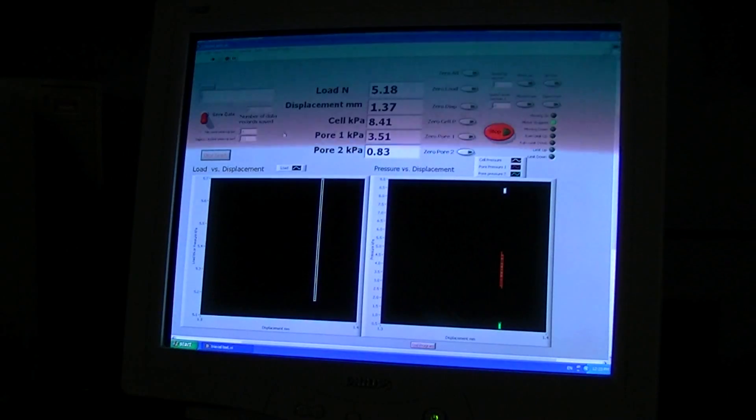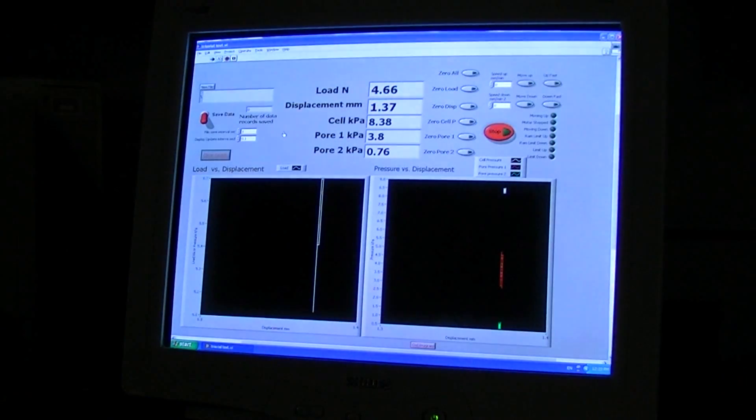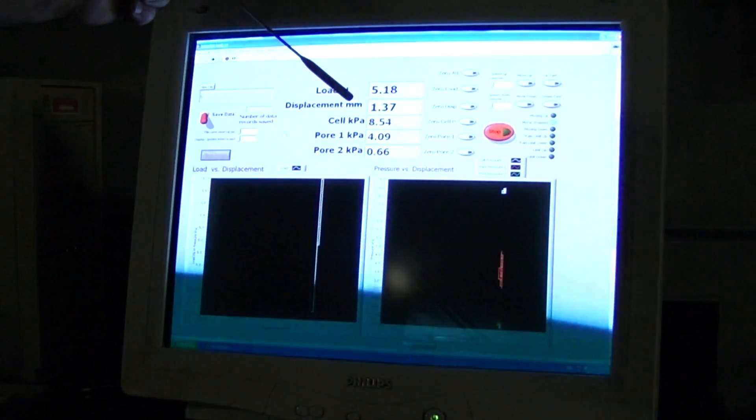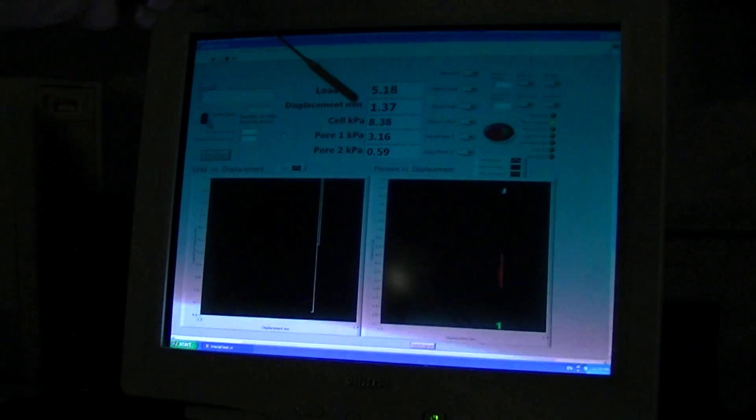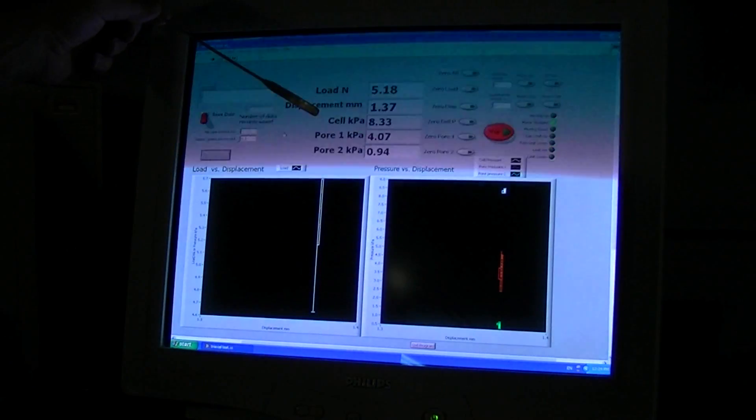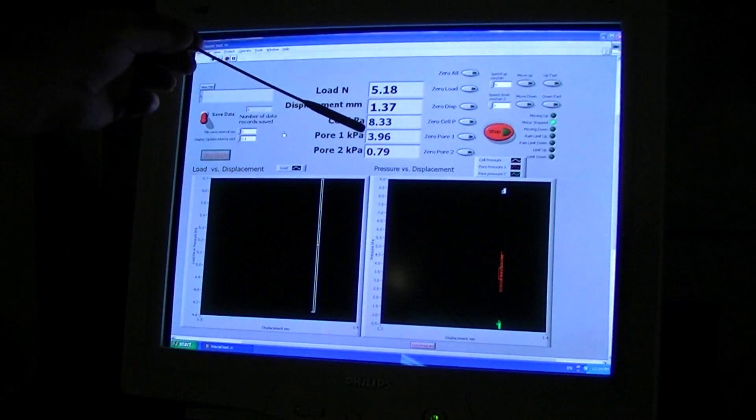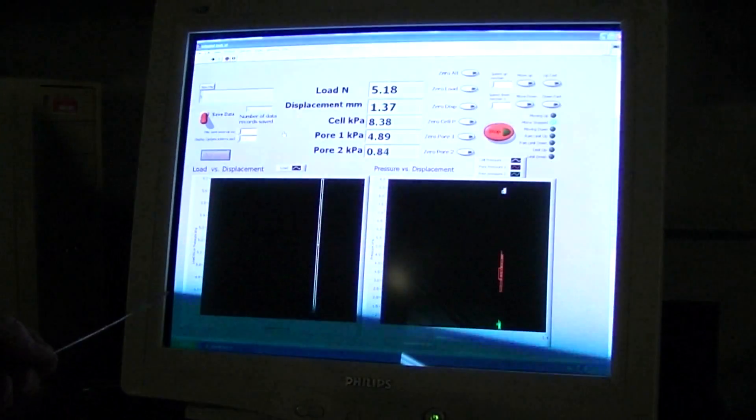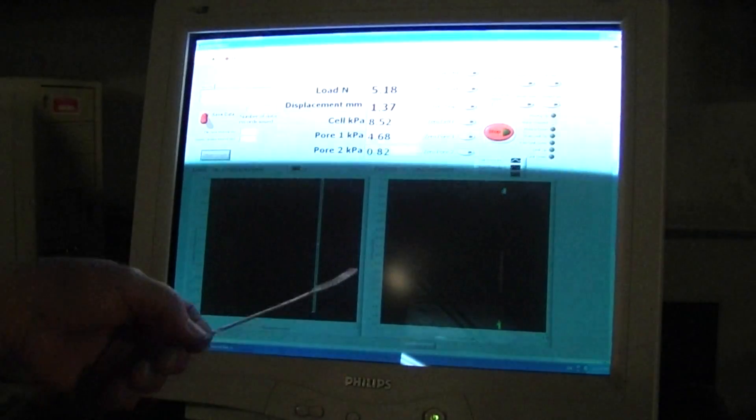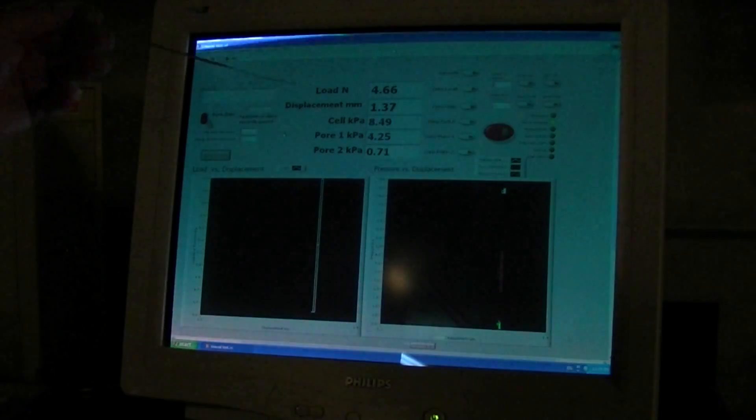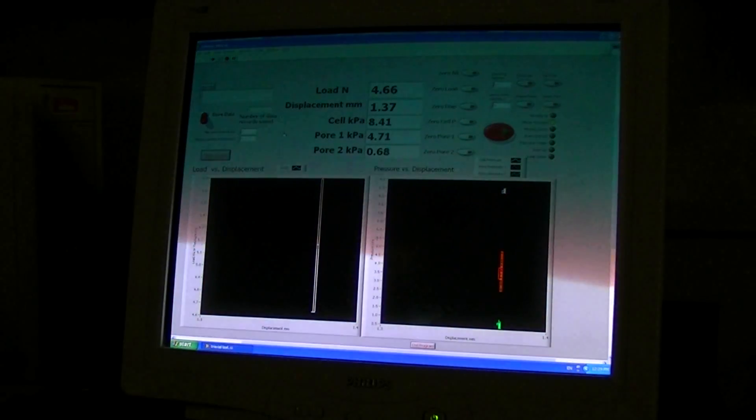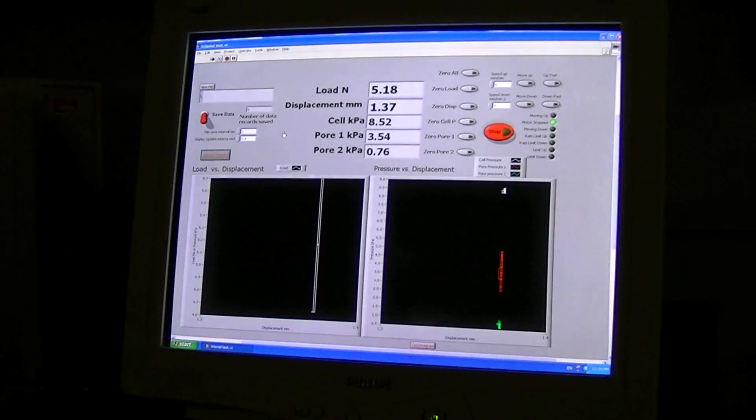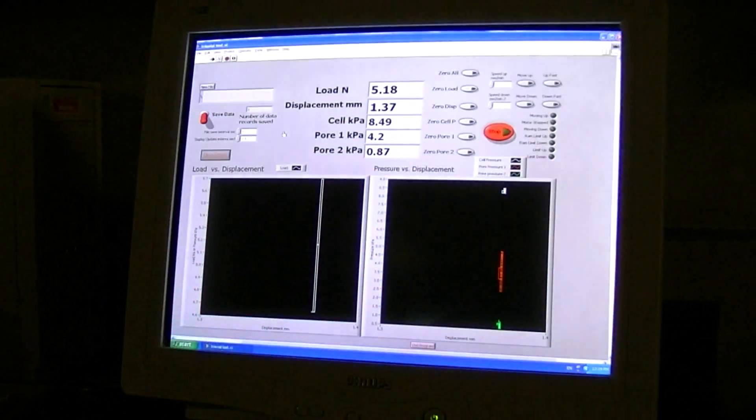The interface on the screen shows us what's happening within the cell and with the drive mechanism. Each of our instruments has a readout: the load displacement of the top versus bottom of the sample, the cell pressure which is the confining pressure around our sample, and the pore water pressures at the top and the bottom. We'll eventually see a graph of the load versus displacement and pressures versus displacement. The system is set up to save this into a data file for later examination and analysis. It collects data over the life of the test.